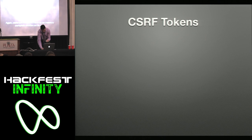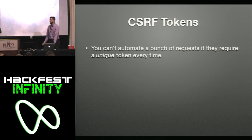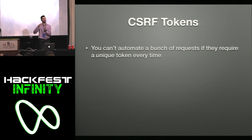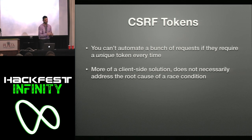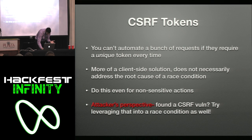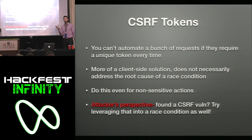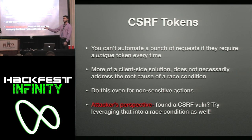An interesting way to help prevent exploitation is CSRF tokens. You can't automate a bunch of requests if they require a unique token every time. CSRF tokens don't prevent race conditions or remove the vulnerability itself, but they really do prevent attackers from exploiting them in web applications. And if you're an attacker and you find a CSRF vulnerability, take a look — you might be able to leverage that into a race condition, since if they didn't do a CSRF check, they might not be doing shared resource checking either. You could turn a low-impact vulnerability into a critical one.